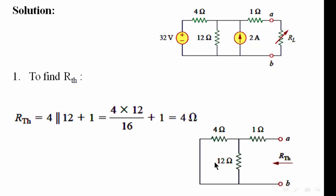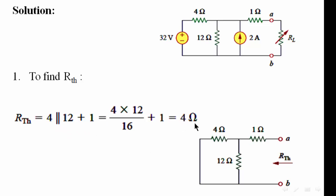So we'll start by calculating the equivalent resistance. We have 4 parallel to 12. The resulting resistance will be in series with the 1 ohm resistance. Therefore, we write 4 parallel to 12 plus 1. And this is the equivalent resistance.